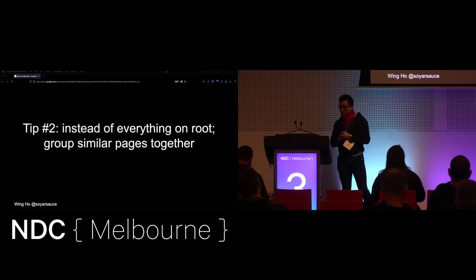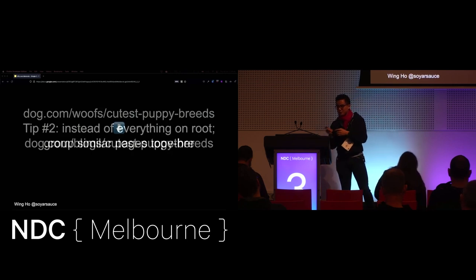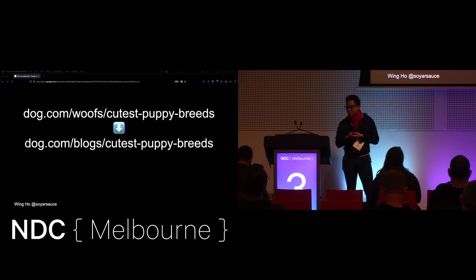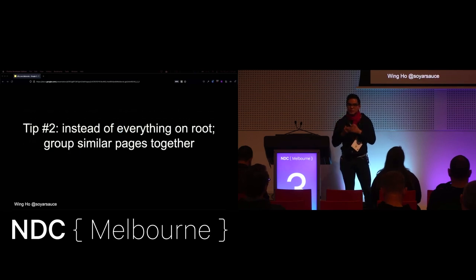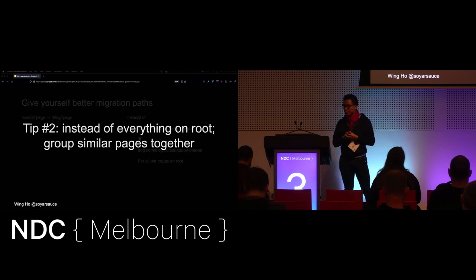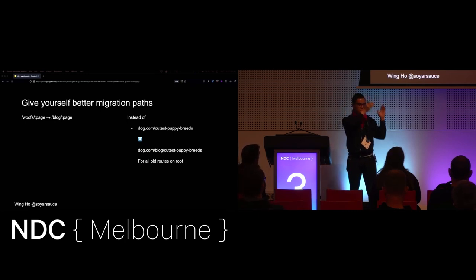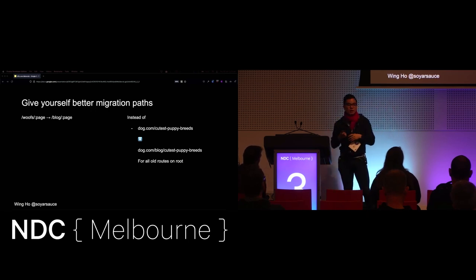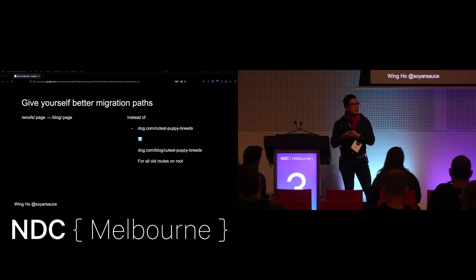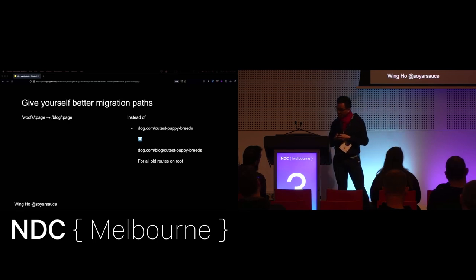The next tip: instead of putting everything on root, group similar pages together. On my example I've prefixed things with 'woofs' or 'blog' to group pages together. What grouping does is it helps you migrate stuff a little bit easier if you do have to move things. Instead of having a mapping of every single old URL, you can just say: I'm going to rewrite all URLs with 'woofs' in them to 'blog'. This isn't always going to be possible, but if you can anticipate it or generally group stuff, that's another way to manage your URLs.